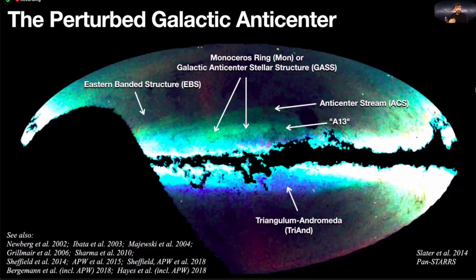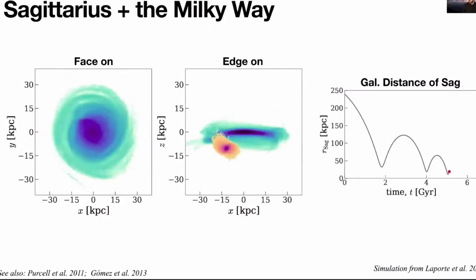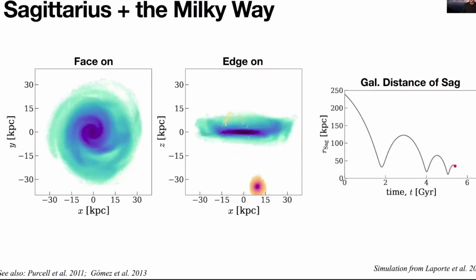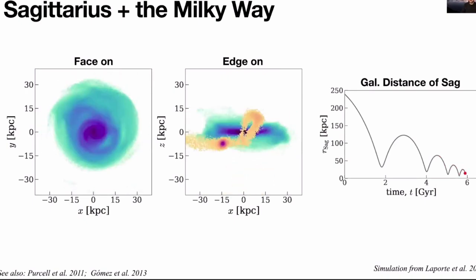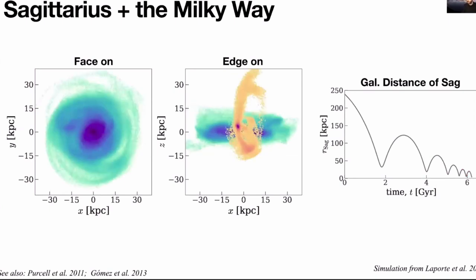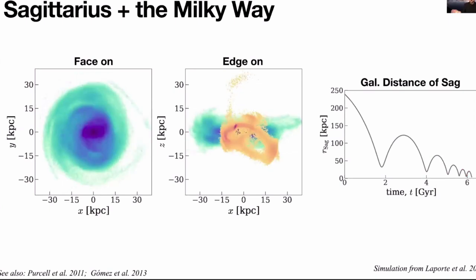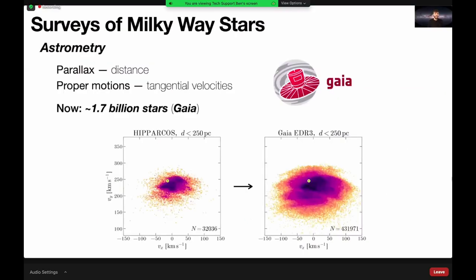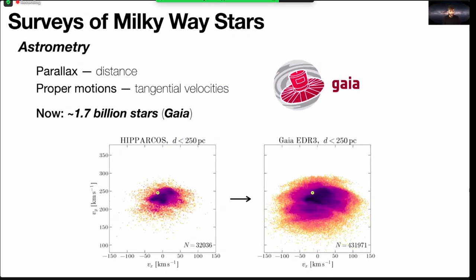It turns out that many of these structures that we thought were actually distinct are not. They're interconnected — they're part of a larger response of the outer disk to perturbations. From this visualization, you get a sense of the really dramatic vertical disturbances that Sagittarius can excite in the disk, kicking stars up to 10 or 15 kiloparsecs away from the midplane in the outer parts of the disk. Gaia has given us an incredible leap in precision of astrometric measurements and in sample size over any past astrometric survey. It's really hard to overstate how groundbreaking Gaia is and will continue to be.